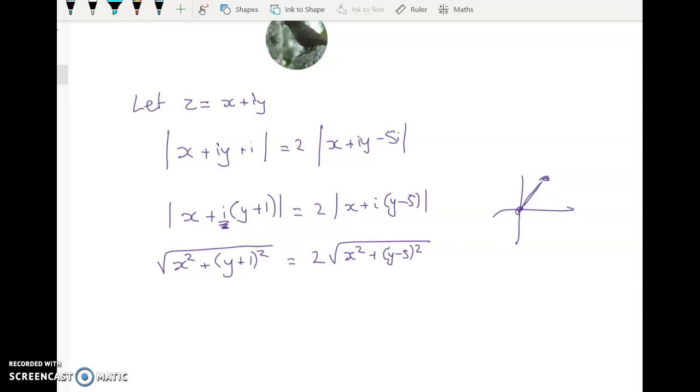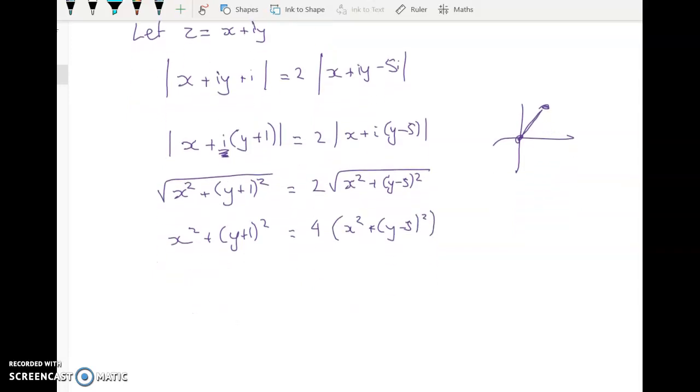And now we're going to square both sides. So we get x squared plus (y plus 1) squared is equal to 4 times (x squared plus (y minus 5) squared). Now if you're watching this and you're in my class, I think it's absolutely fine to go straight from here to here. There's no problem with that. It's not a proof question. You're just asked to find the locus equation.